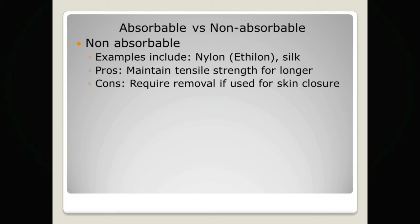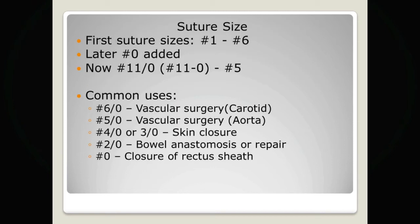We'll now look at the way in which different sutures are sized. The first suture sizes extend from number one to number six, with number one being the smallest diameter and number six the largest. As technology improved, number zero was added, and then smaller and smaller diameter sutures were manufactured. Because number zero was the smallest, the next smallest suture was 1-0 or '1 oh', and this now extends all the way down to 11-0.